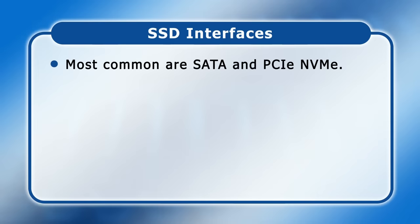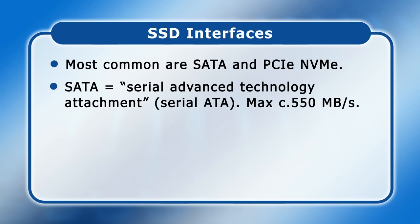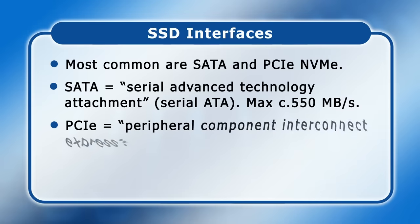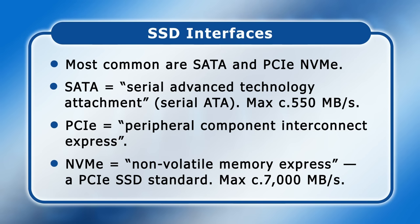SSDs are available with a variety of different interfaces, with the two most common being SATA and PCIe NVMe. SATA stands for Serial Advanced Technology Attachment and delivers a maximum data transfer speed of around 550 megabytes a second. Meanwhile, PCIe stands for Peripheral Component Interconnect Express, with NVMe, or Non-Volatile Memory Express, being a standard for connecting SSDs via PCIe. You may see SSDs labeled as having a PCIe interface, an NVMe interface, or a PCIe NVMe interface, but today all of these refer to the same thing. Maximum data transfer speeds for NVMe SSDs are up to 7000 megabytes a second for the latest drives connected to computers with a PCIe 4.0 interface.